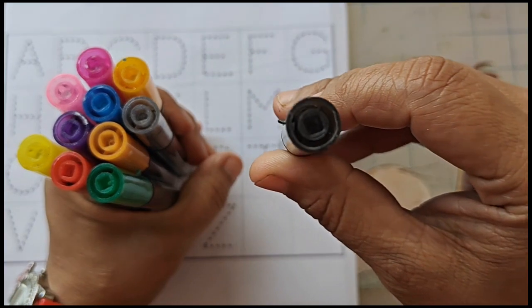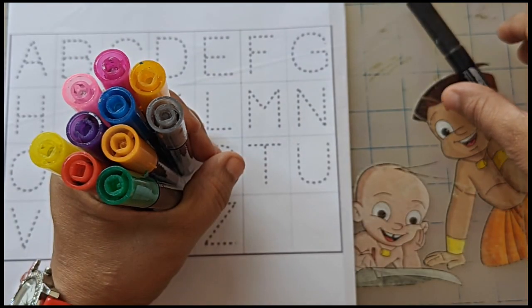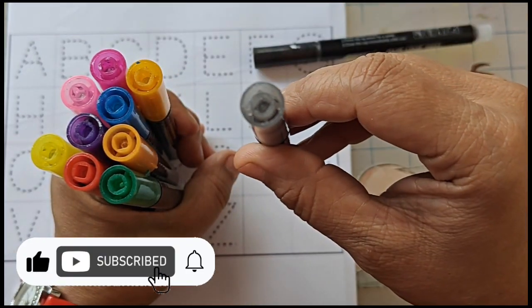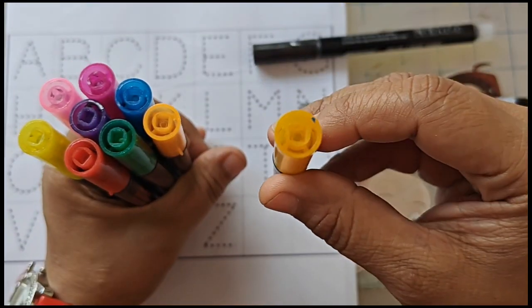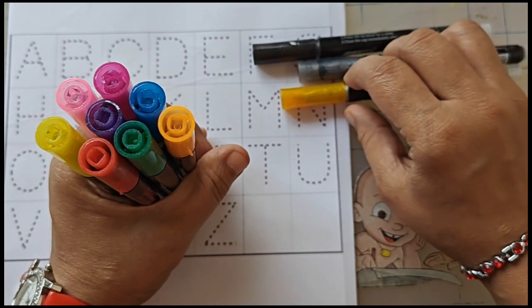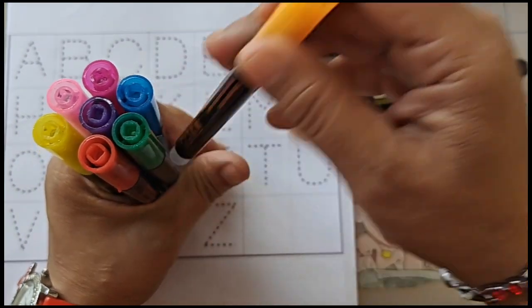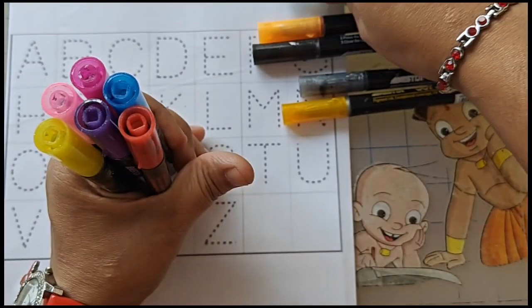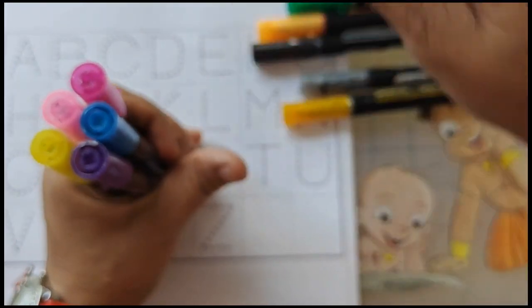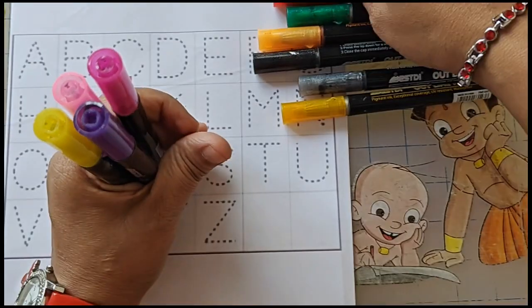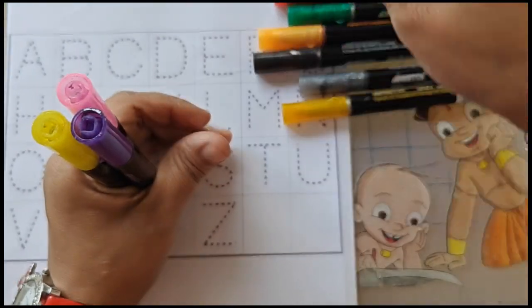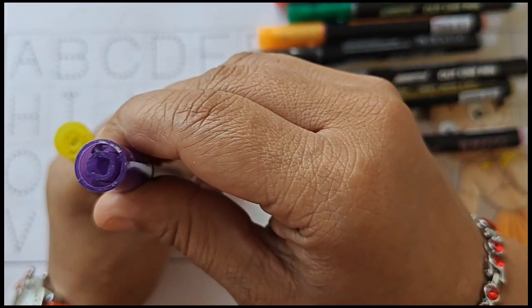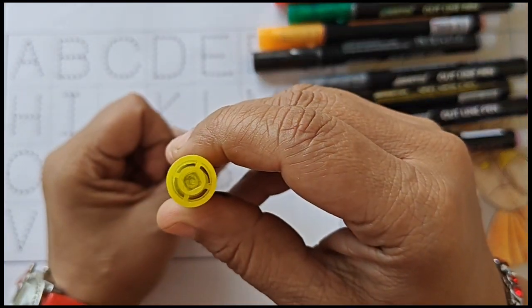This is black color, grey color, orange, fluorescent yellow, green, red, blue, pink, baby pink, purple, lime yellow.